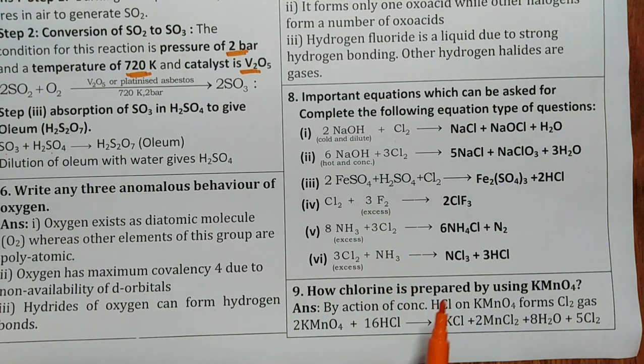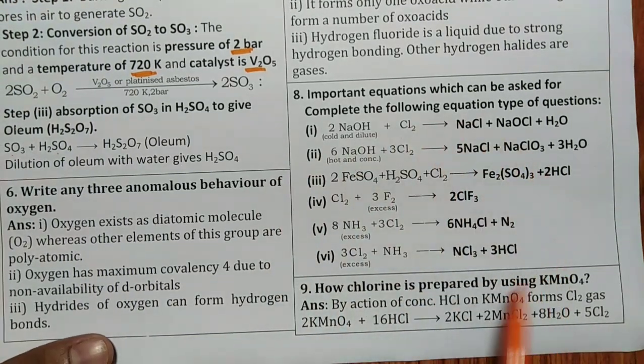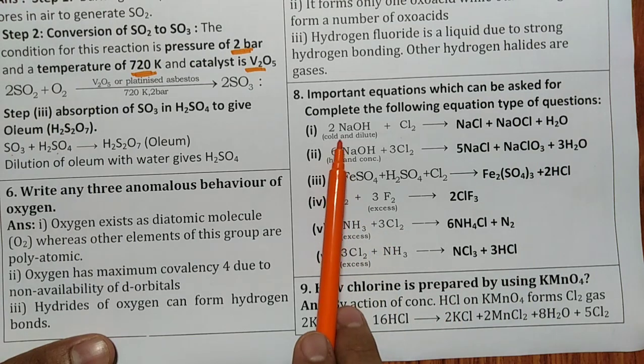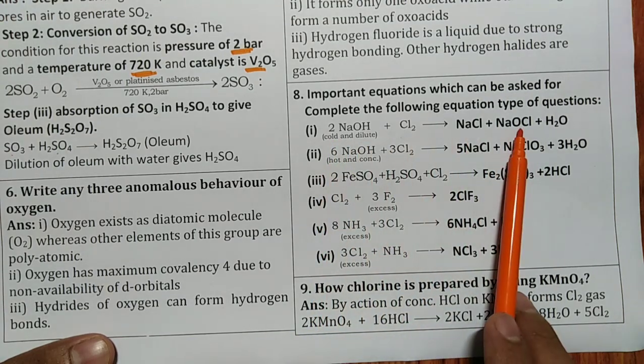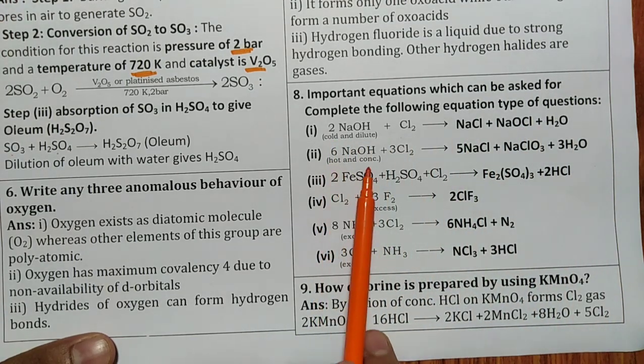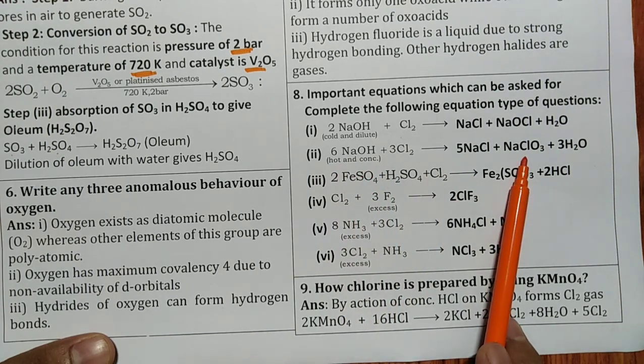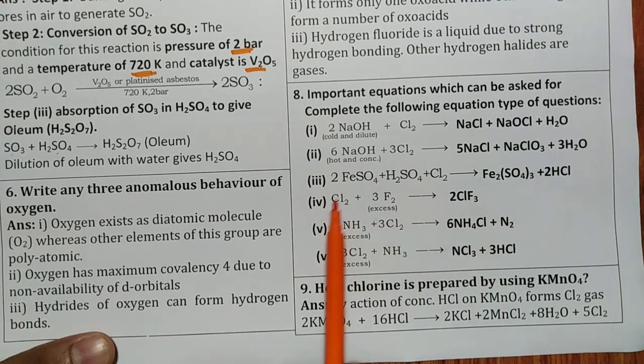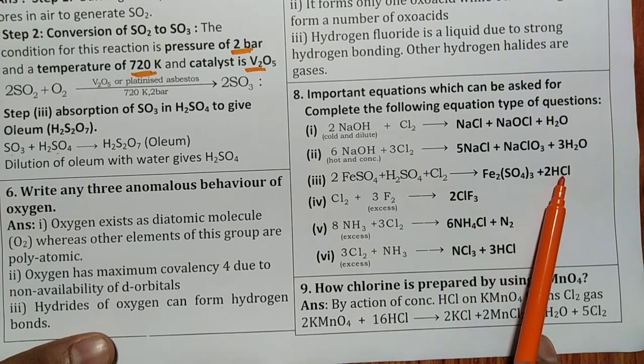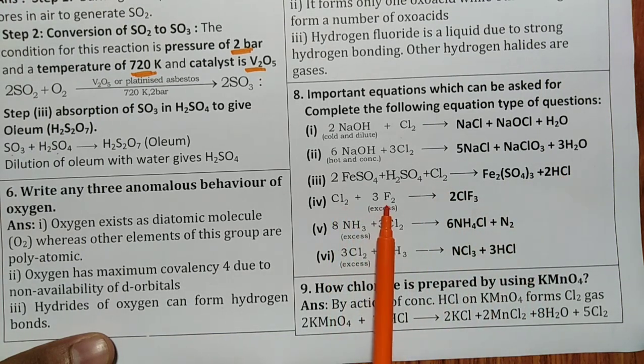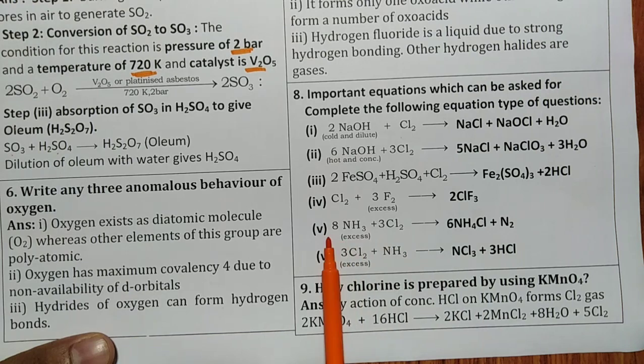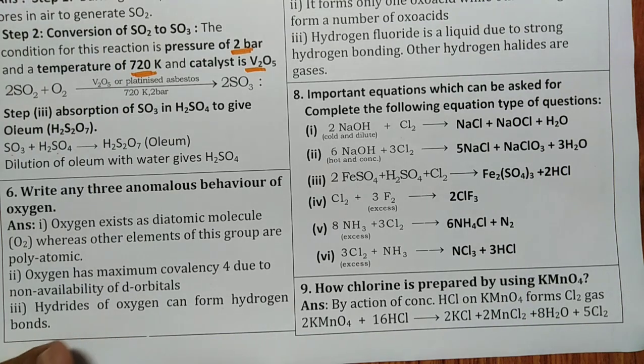Practice all these reactions. NaOH with Cl2. Cold and diluted gives NaCl plus NaClO. Hot and concentrated gives NaClO3. FeSO4 plus H2SO4 plus Cl2 releases HCl gas. Cl2 plus 3F2 gives ClF3. NH3 plus Cl2 gives NH4Cl plus N2. Cl2 in excess gives NCl3 plus HCl. Remember these things.